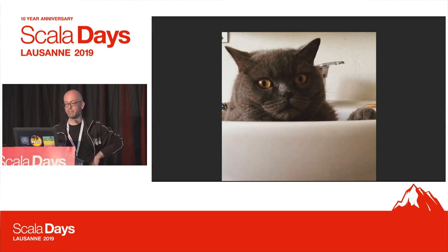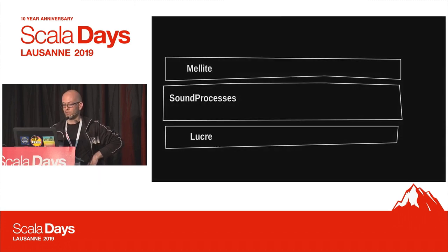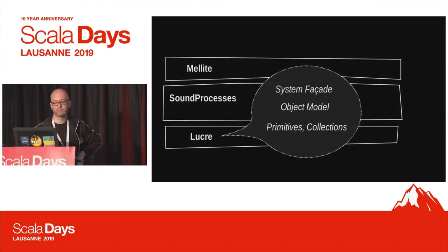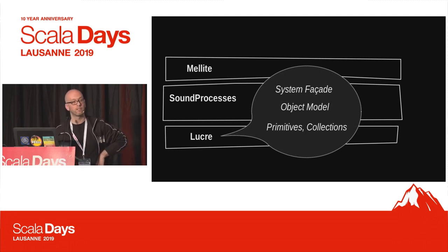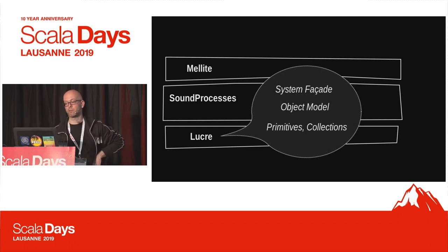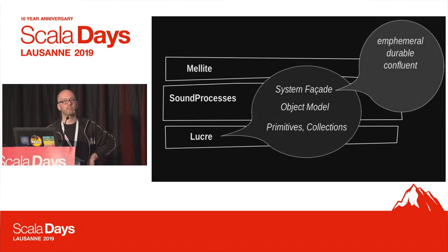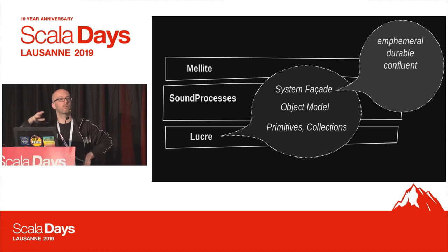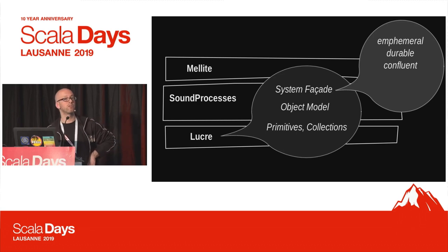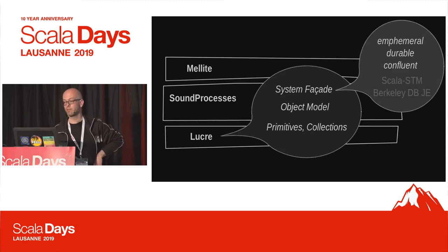This is Lucrezia — that's why the system is called Lucre. She was born at the time when I created the system. Lucre is the base layer with basically three functions. One is called the system facade: since I want to trace different temporalities of working with sound, it can abstract over them. Objects are parameterized with a system type — the system can be in-memory and ephemeral, or made durable so the system automatically persists objects. It has a serialization layer built in. The whole architecture is based on the software transactional memory paradigm, and because we want to persist, this is coupled to the transactions of a key-value store.